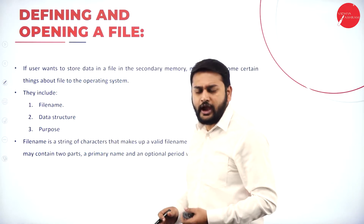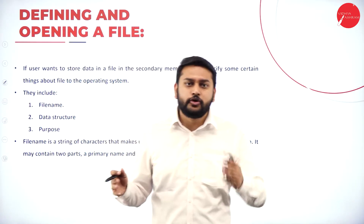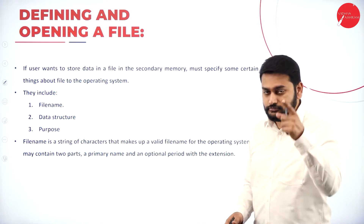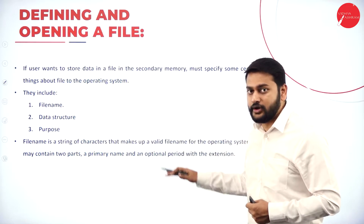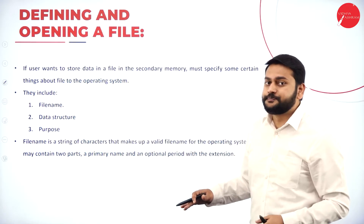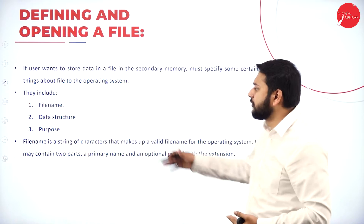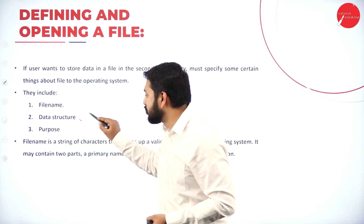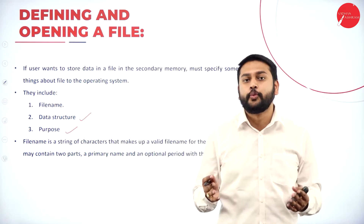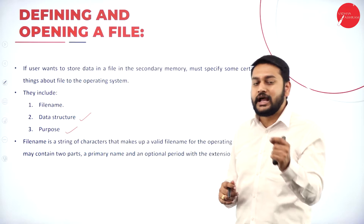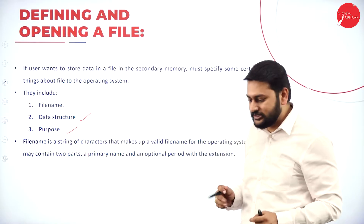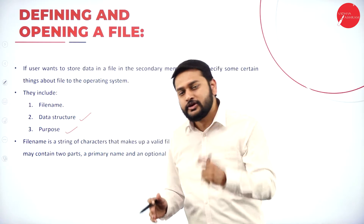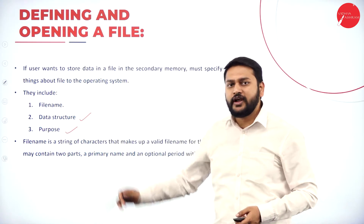If I want to define and open a file, I have to follow some important things. There are three requirements for the operating system to open a file: the file name, the data structure, and the purpose — why are you opening it. These three things are mandatory.